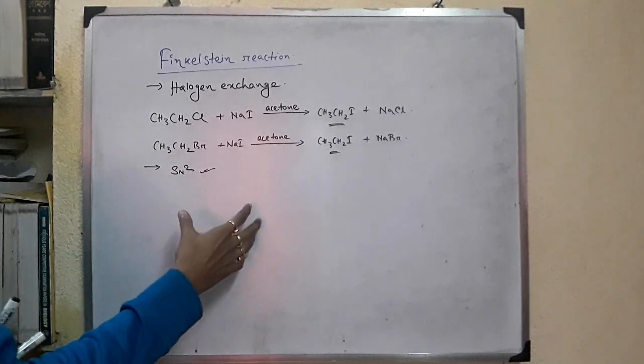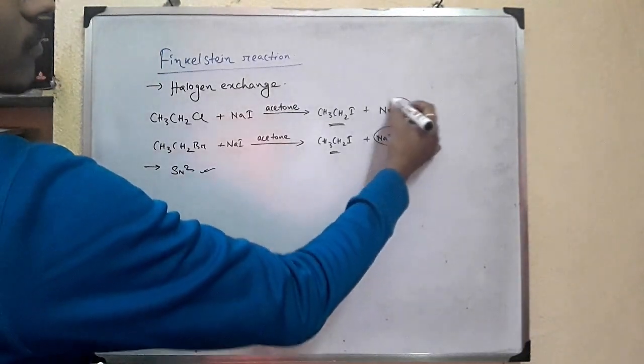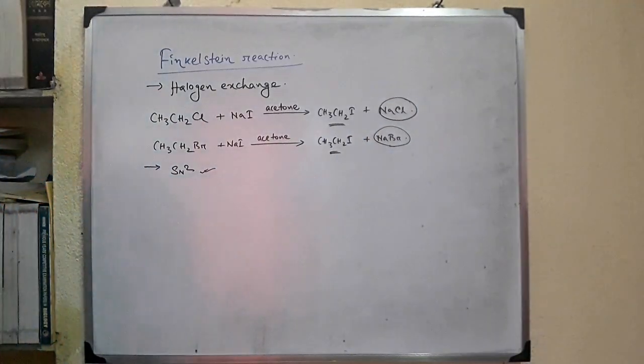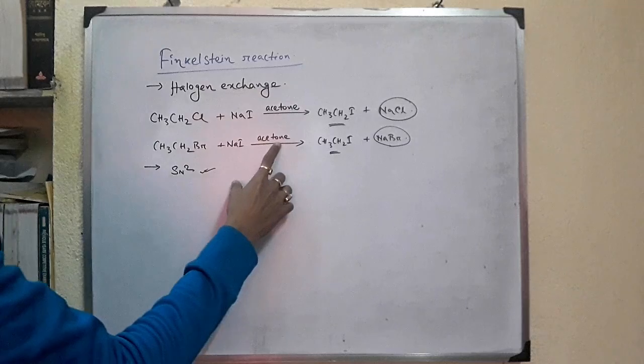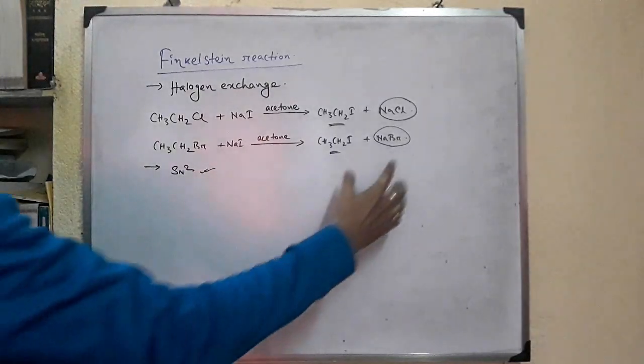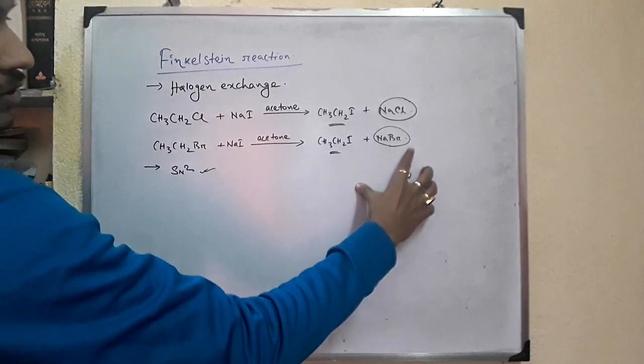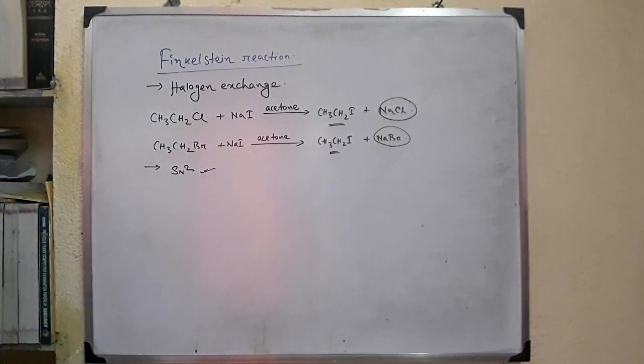The equilibrium of the reaction depends on the solubility of the newly formed metal halide salts in the solvent. Sodium iodide is soluble in acetone, but the newly formed metal halide salts NaCl and NaBr are poorly soluble in acetone and hence get precipitated from the reaction.